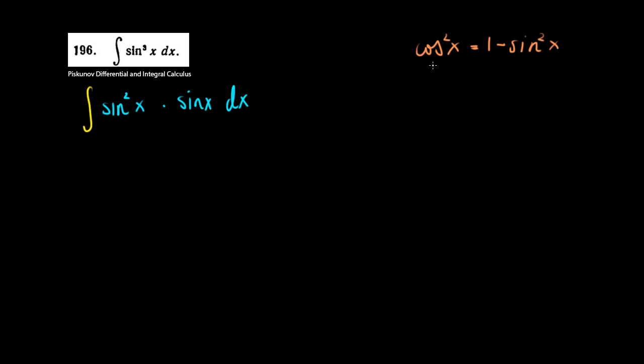Actually, I should have done the opposite. Sine squared x equals 1 minus cosine squared x. Both are correct, but I'll use the second one.